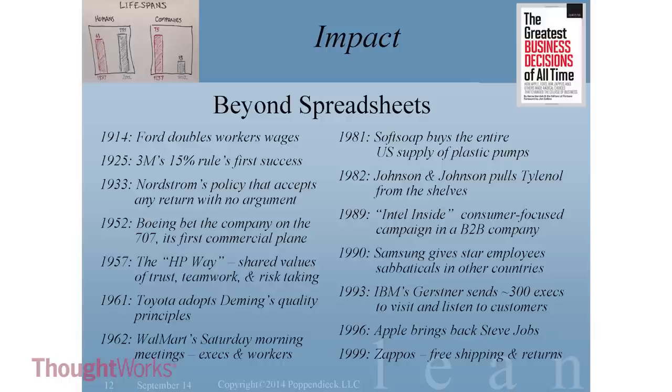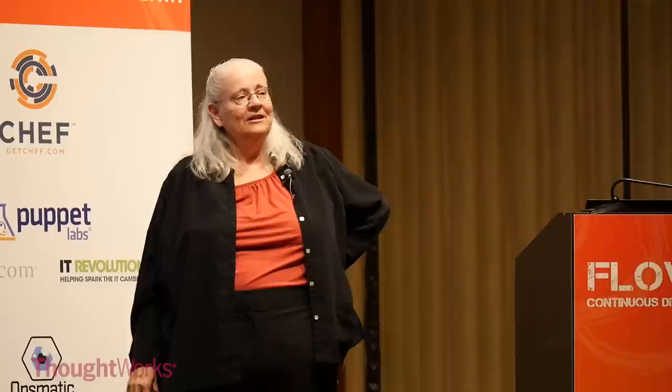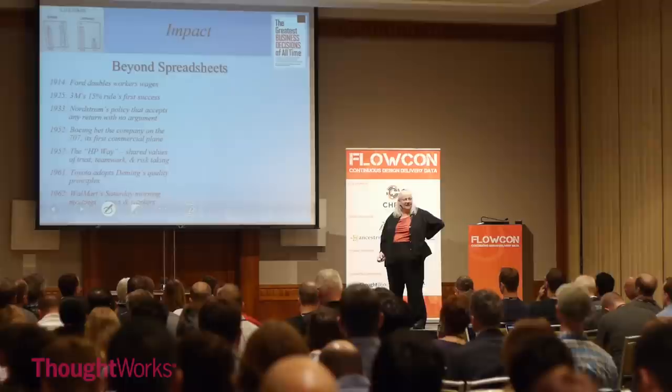In 1962, Walmart started meetings between the executives and the clerks in the store every Saturday morning. They'd talk — the clerks would say what they thought needed to be in the store, and the executives would show how the company was doing. This continued for decades, where executives met with the people actually on the floor selling.